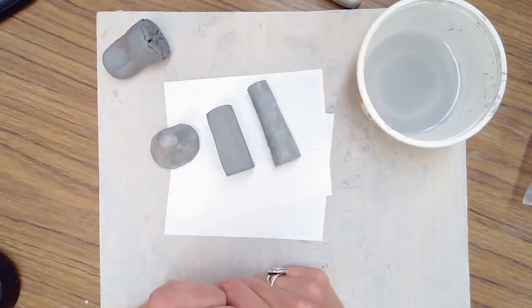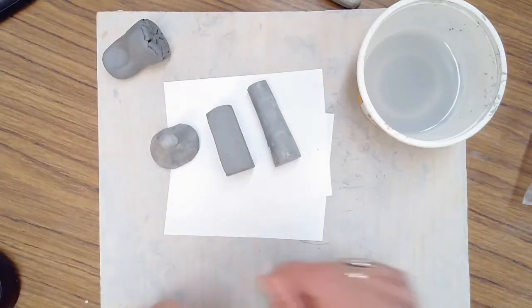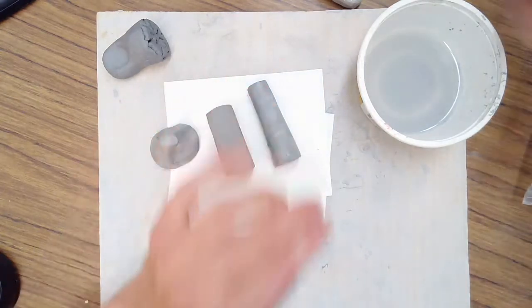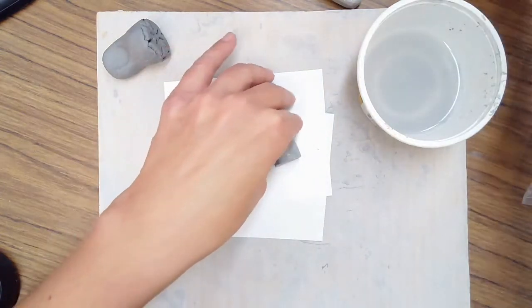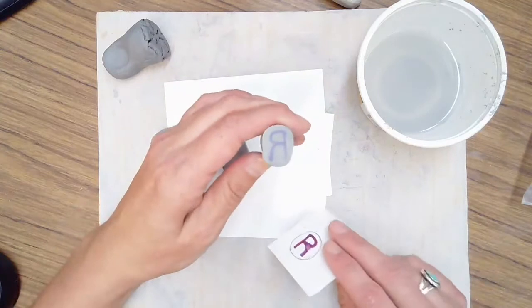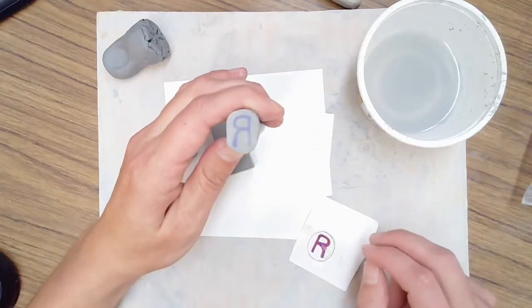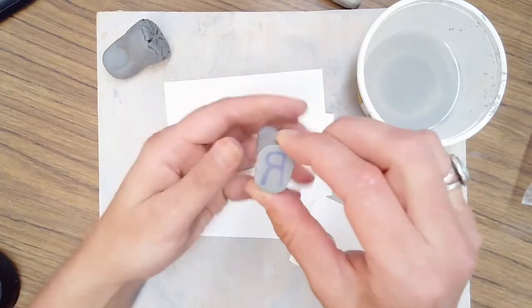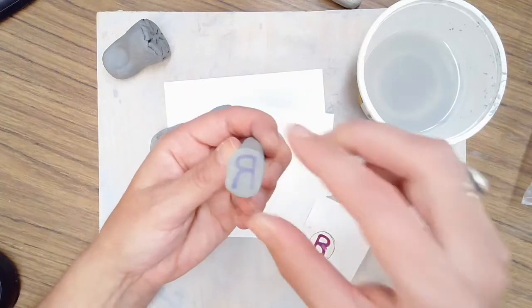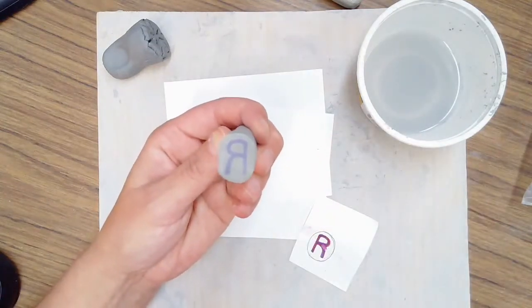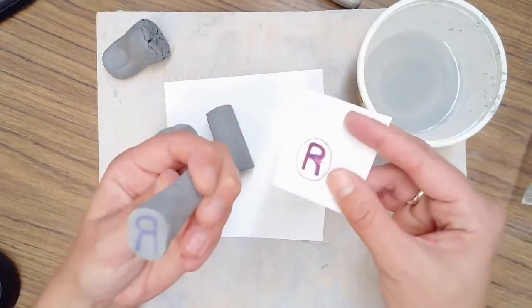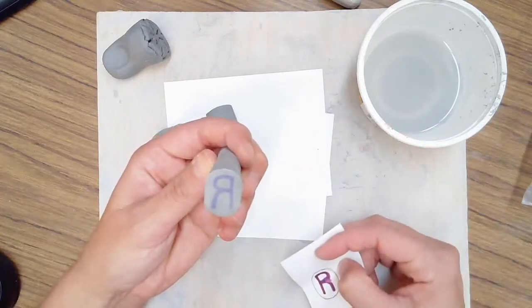One of them is going to have letters because it is your signature stamp. Now, it's really important that your letter is backwards on your stamp. Otherwise, it's going to be backwards on your piece of pottery, which you do not want. So, here's the letter R. I got it on here backwards. I'm going to show you how to do that.